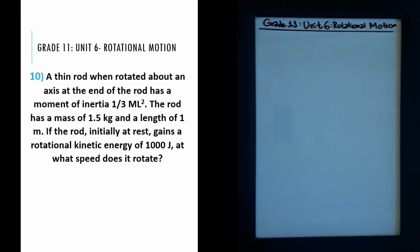Welcome back to JM Lectures. This is the sixth unit in the series on rotational motion. Question 10 says: a thin rod, when rotated about an axis at the end of the rod, has a moment of inertia of one-third ml squared. The rod has a mass of 1.5 kg and a length of one meter. If the rod initially at rest gains a rotational kinetic energy of 1000 joules, at what speed does it rotate?